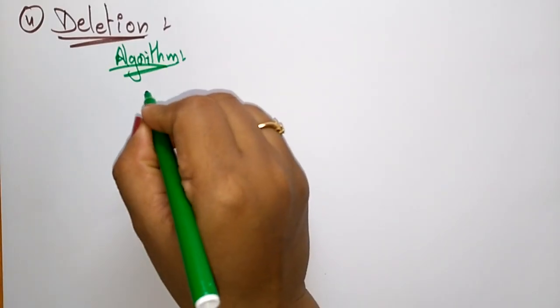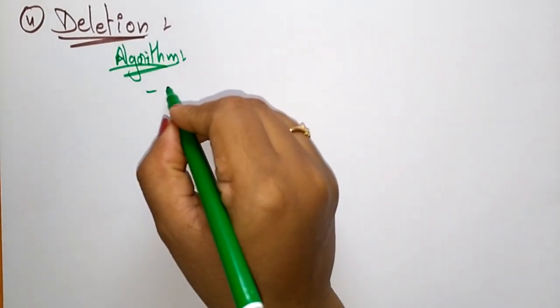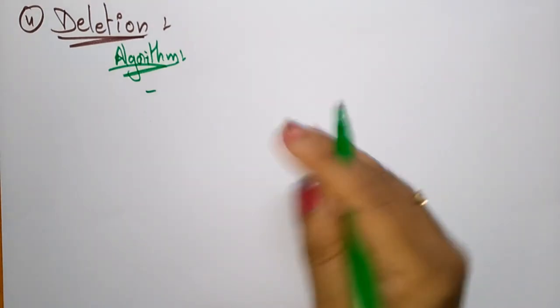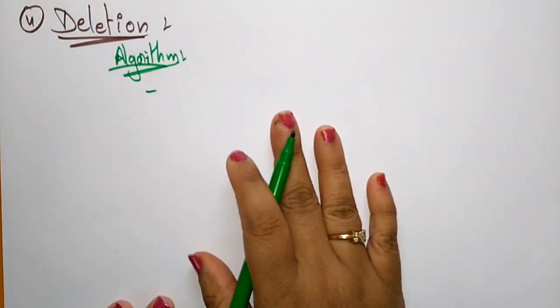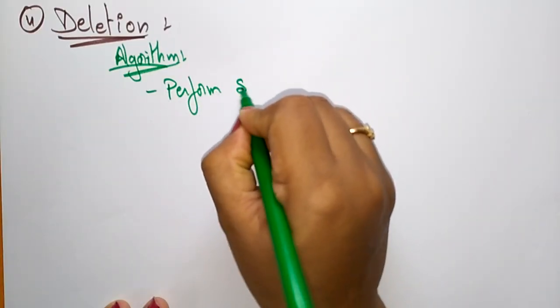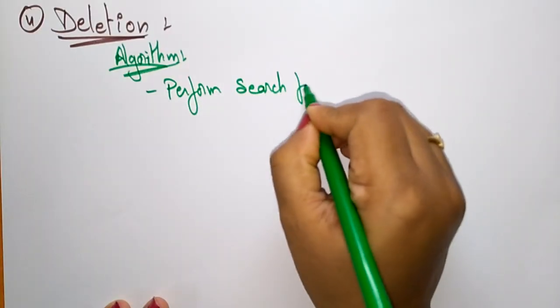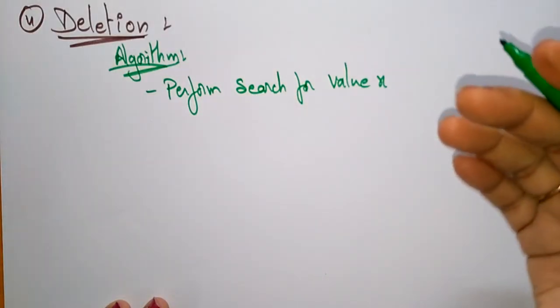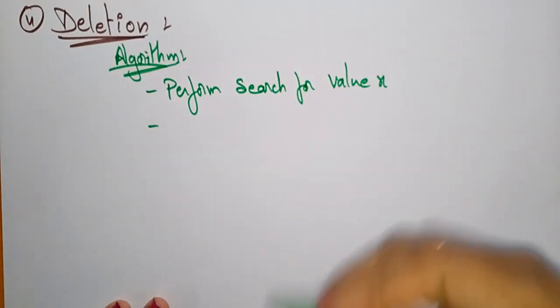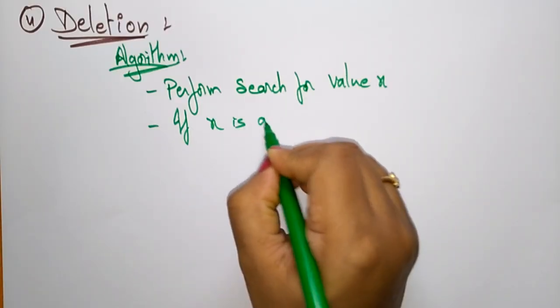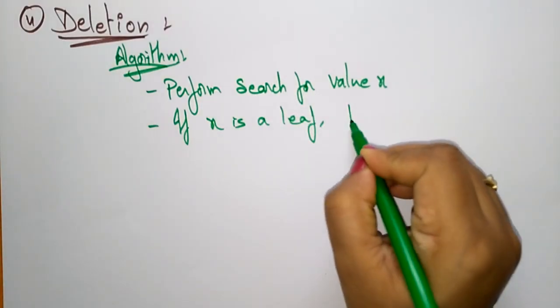Algorithm: first you need to perform a search for value X. If you want to delete an element, first you need to find out where that element is exactly present — whether it is in the left subtree or the right subtree. So perform search for value X, whatever the value that you want to delete. Suppose if X is a leaf, delete X.